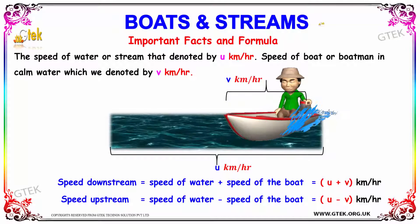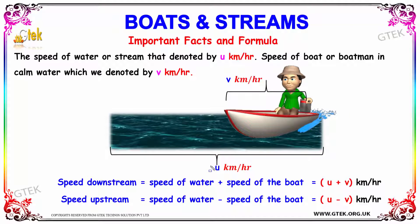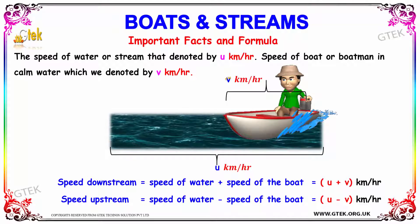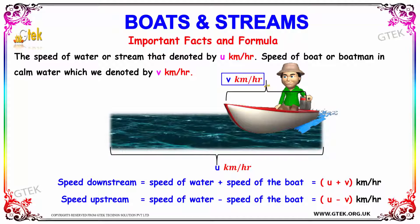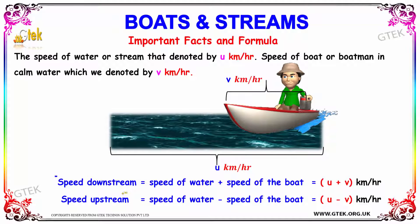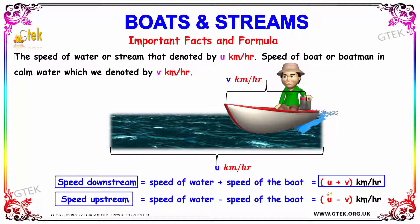Let us consider the speed of the water or stream to be denoted by u kilometers per hour, and the speed of the boat or the boatman in calm water is denoted by v kilometers per hour. Then the speed downstream can be calculated by adding the speed of water with the speed of boat — that is u plus v kilometers per hour. The speed upstream is obtained by the difference: u minus v kilometers per hour.